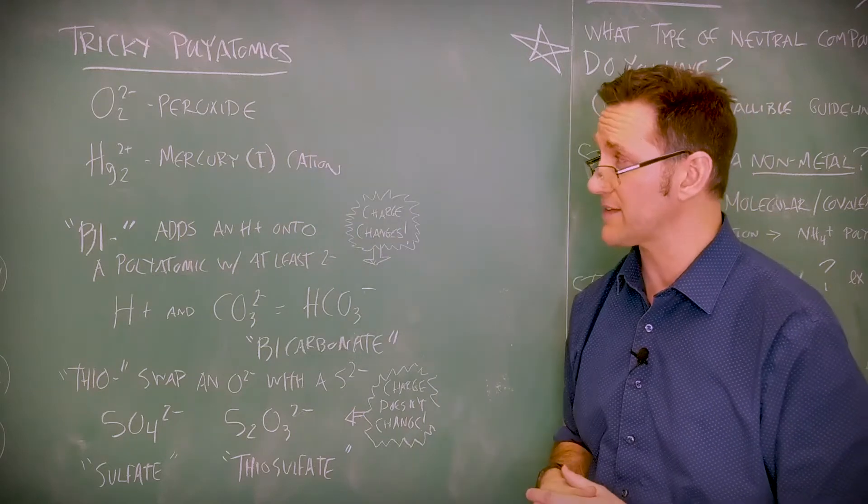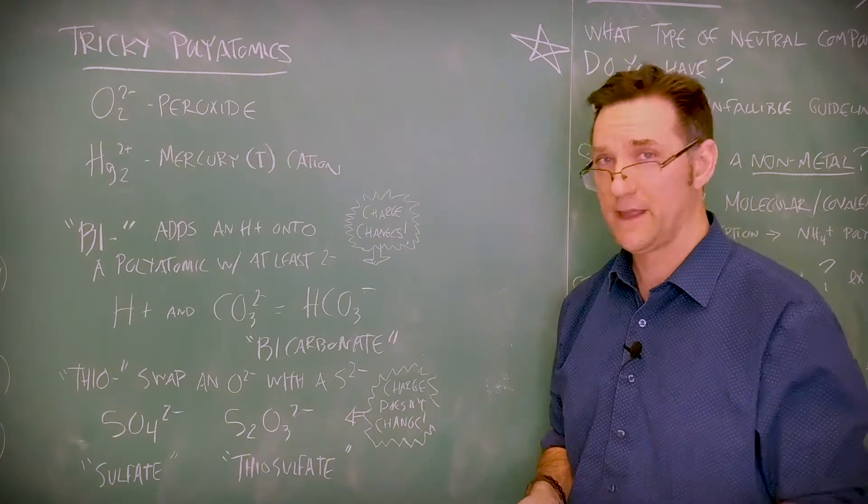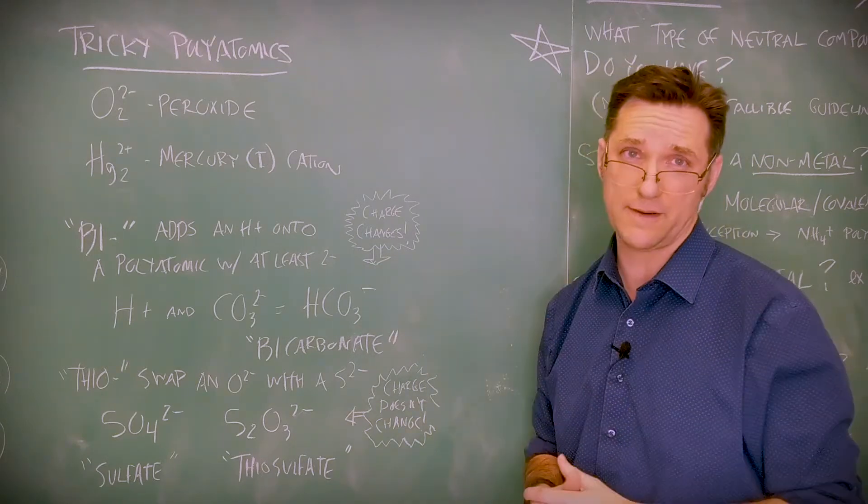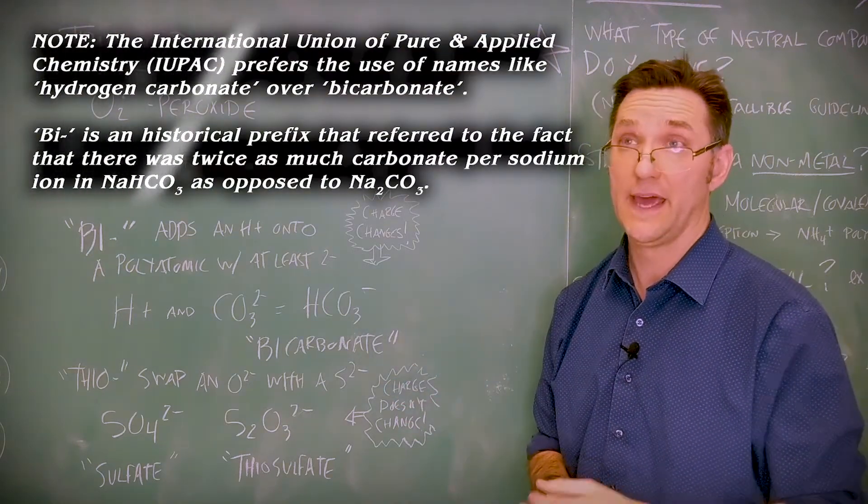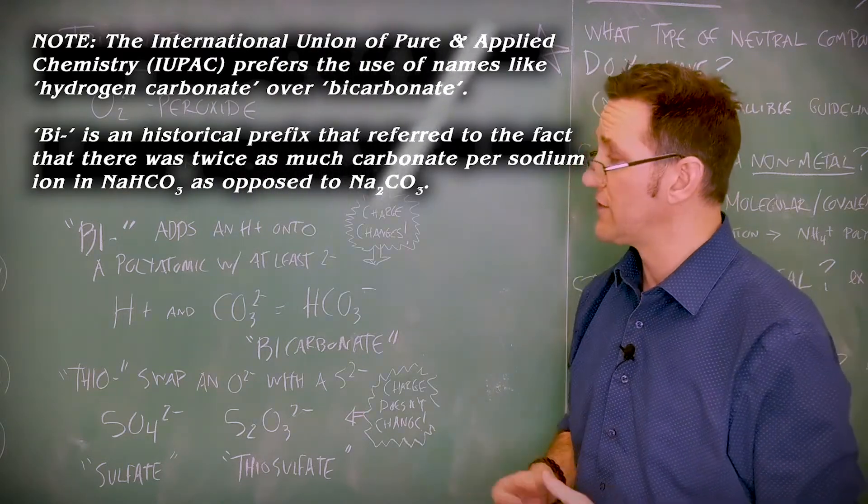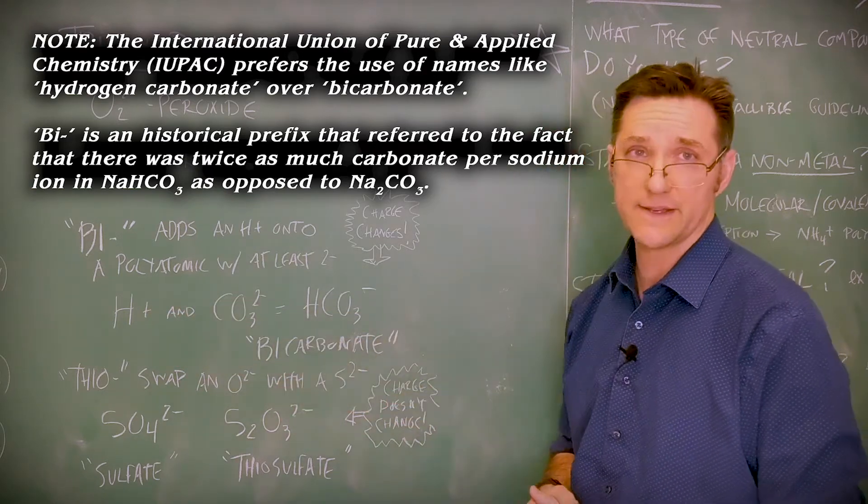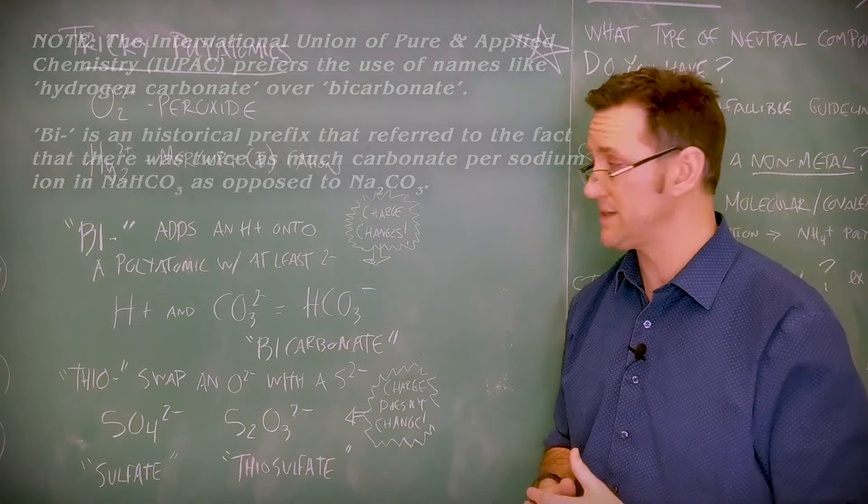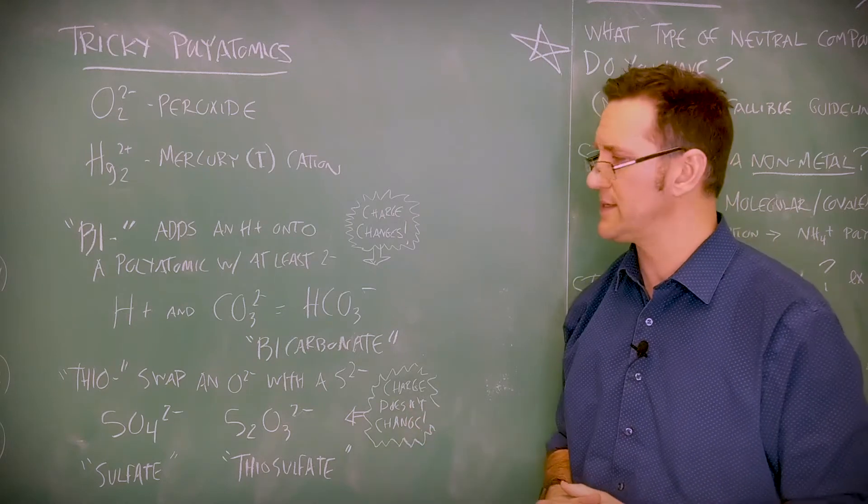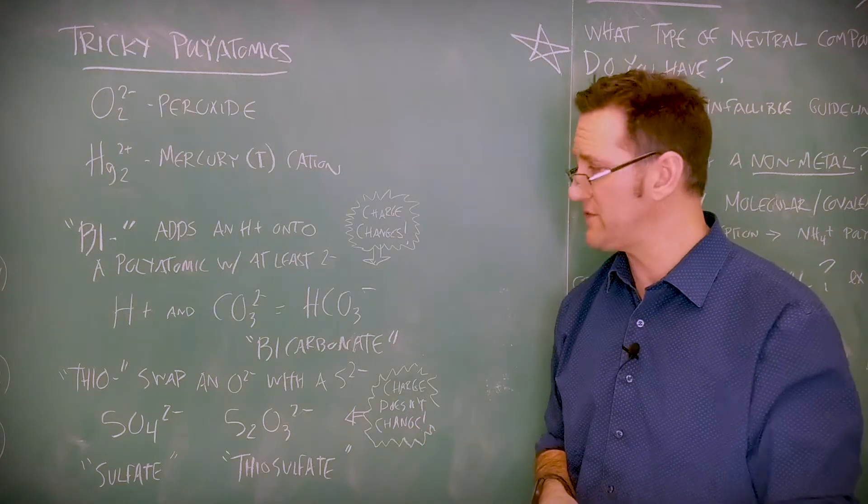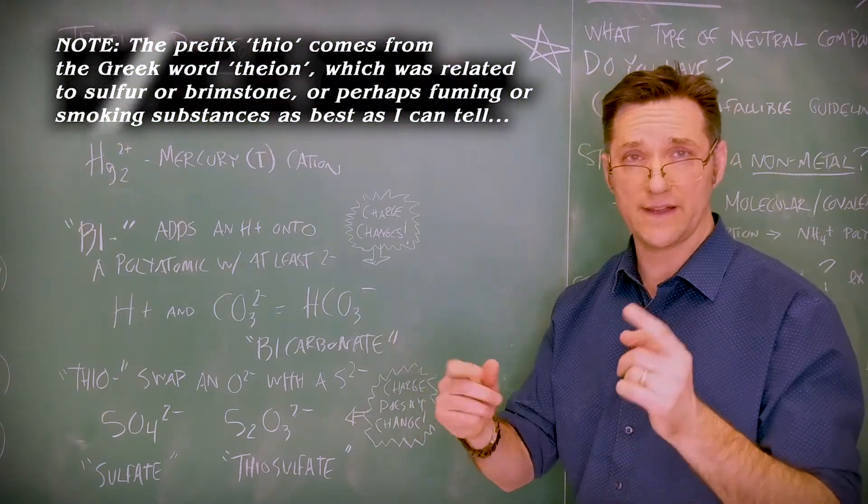You do run into bi and thio a lot though. It's very common for a student to see the bi prefix and think that you have two of them, but that's not the case. Bi simply means that we've added hydrogen onto an existing polyatomic. And with it, we've soaked up one of the negative charges. So for instance, carbonate is CO3 two minus. If I add an H plus to it, I get bicarbonate.